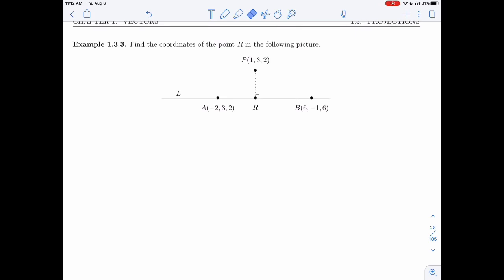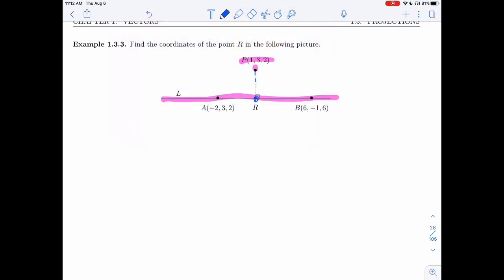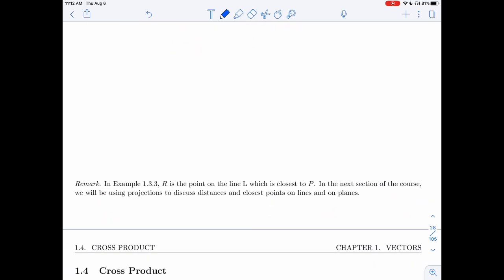All right, so in this picture, I'm given a line, and the line is being given by the two points that are on it. I have the coordinates of A and the coordinates of B. And I have a point P that doesn't appear to be on that line. And what I want to find is this point R right here. And there's a remark at the bottom of this page, the point R on the line is the point on the line L which is closest to P.